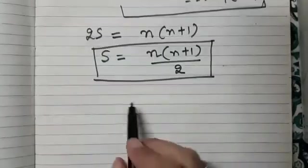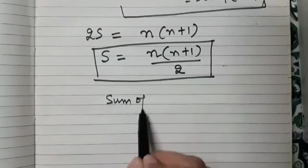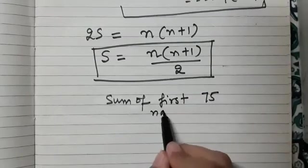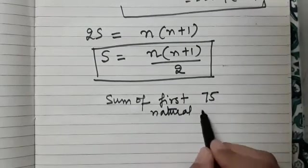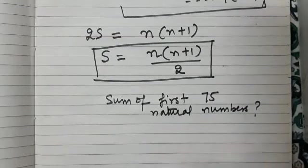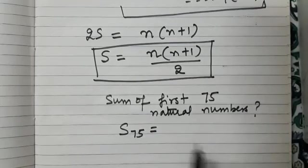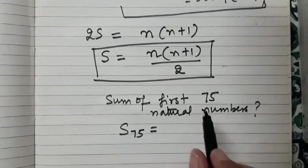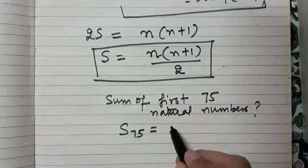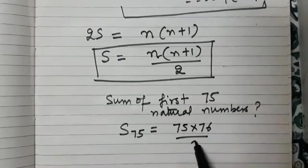So now you tell me quickly, what is the sum of first 75 natural numbers? Tell me, that means we have to find S75. Yes, you are right. We will be using at the place of n, 75. So that will be 75 into 76 divided by 2.